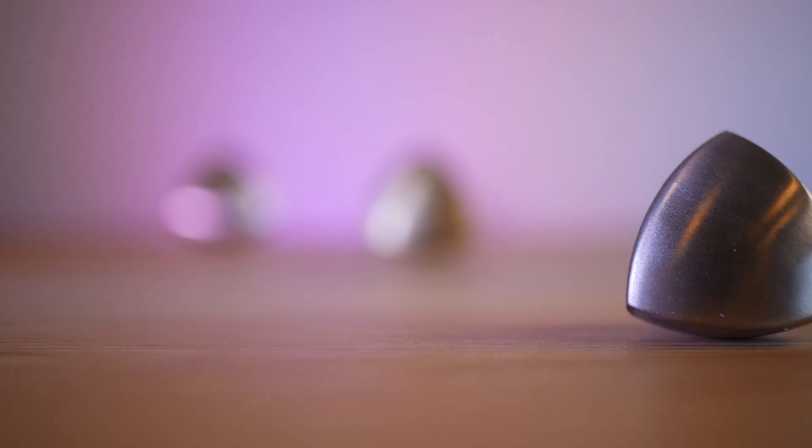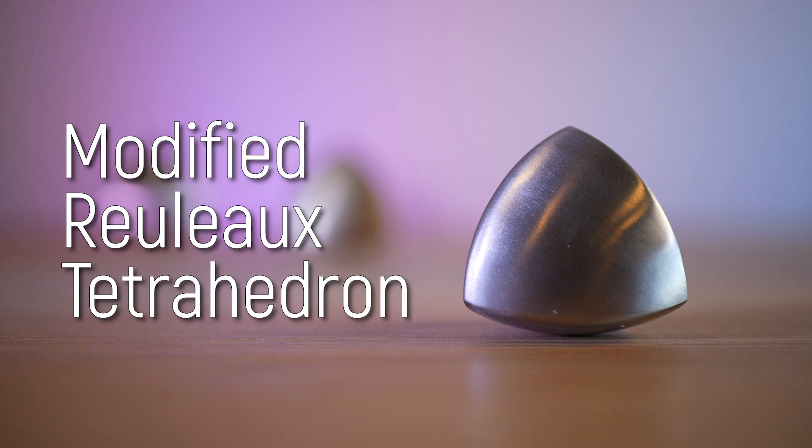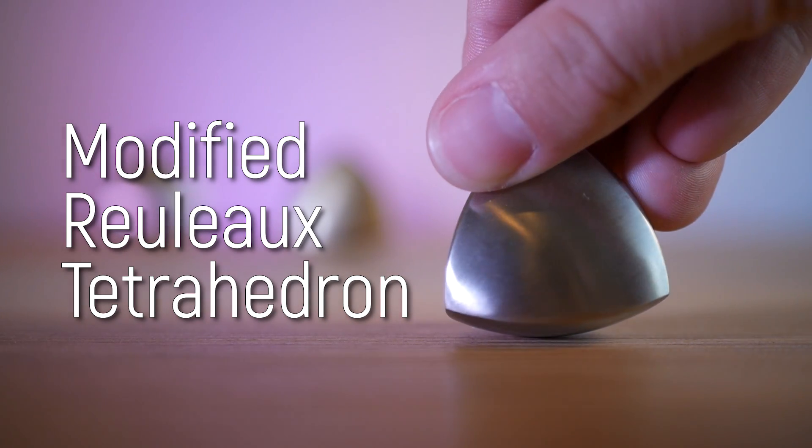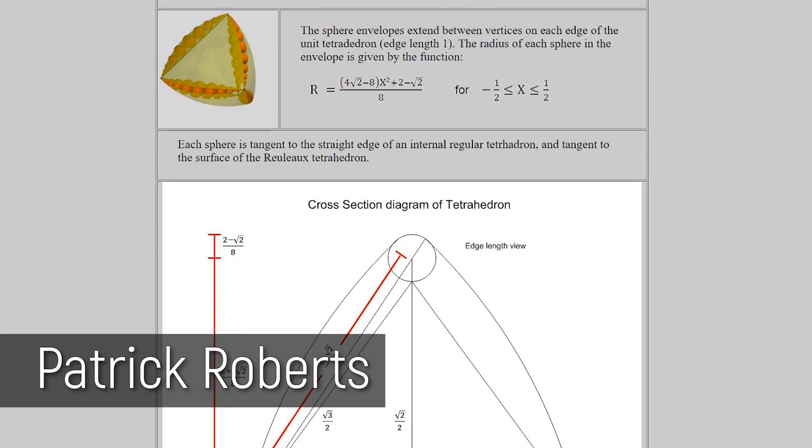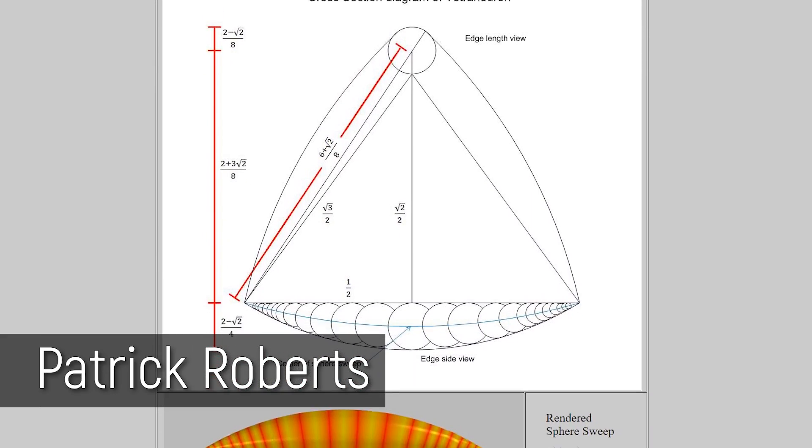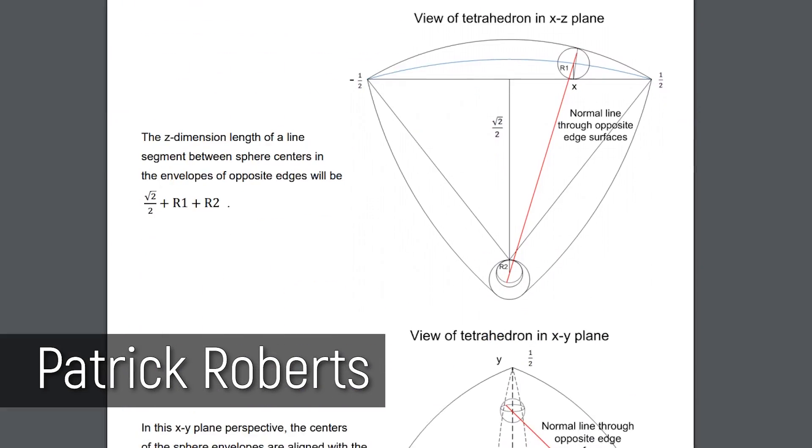This is a modified Reuleaux Tetrahedron, a spheroform with tetrahedral symmetry, and a true solid of constant width. It's a culmination of work by Patrick Roberts, and replaces the edges with what's known as an envelope of spheres. This modifies the geometry enough to result in a true solid of constant width.